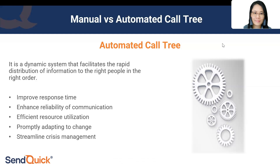The fifth benefit is streamlined crisis management. During high-pressure situations, using automation to coordinate and mobilize resources to disseminate information saves a lot of time. Broadcasting and notifications can be automated, freeing you to focus on more important tasks and helping management make decisions more quickly.